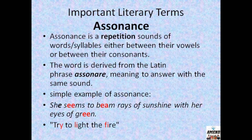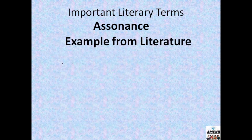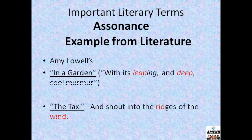Next example: 'Try to light the fire' — here the long I sound repeats in 'try,' 'light,' and 'fire.' Assonance is basically the repetition of vowel sounds within two words. From Amy Lowell's poem 'In a Garden': 'With its leaping and deep cool murmur' — the long E sound repeats in 'leap' and 'deep.' From another Amy Lowell poem 'The Taxi': 'And shout into the ridges of the wind' — the short E sound repeats in 'ridges' and 'wind.' That is why it comes under the category of assonance.